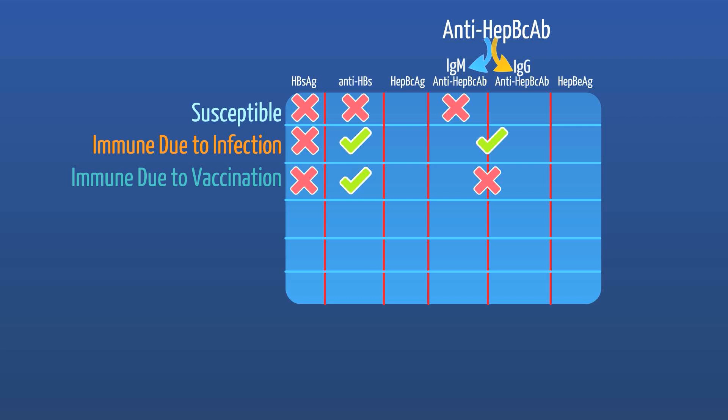The next scenario: surface antigen is positive, core antigen is positive, and IgM core antibody is positive. Given the surface antibody is negative, the patient has not developed immunity. Since both surface antigen and core antigen are positive, this patient has an active infection. The core IgM antibody being positive indicates an acute infection. To summarize: with antigens being positive and only IgM core antibody positive, this indicates an acute hepatitis B infection.